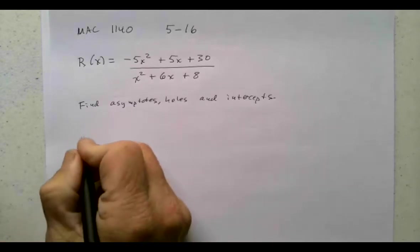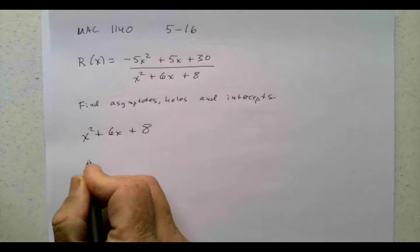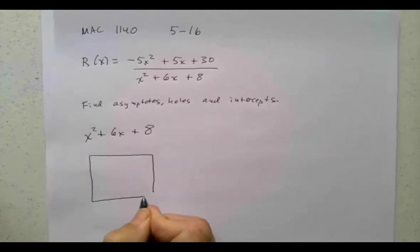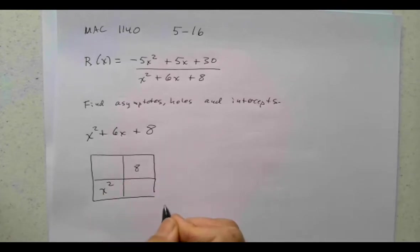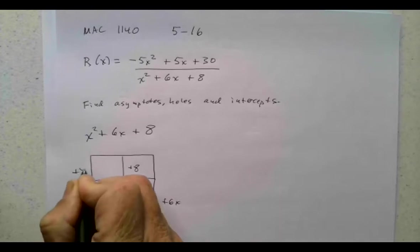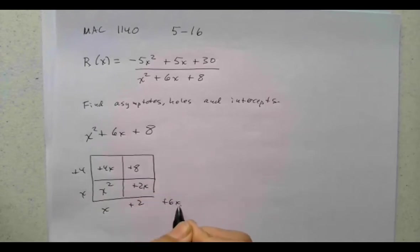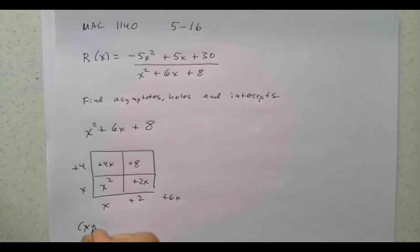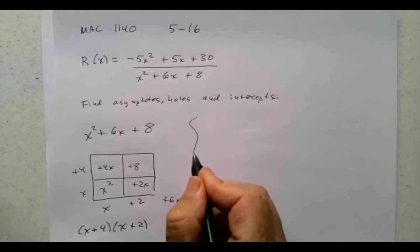Let's factor — I always like to factor the bottom first. x squared plus 6x plus 8. Using the factor box: x times x, plus 4 plus 2, gives us plus 4x and plus 2x which is plus 6x. So we get (x + 4)(x + 2) downstairs. Remember, the bottom can't be 0, so the domain throws out negative 4 and negative 2.